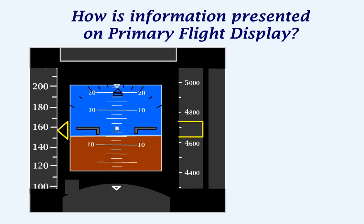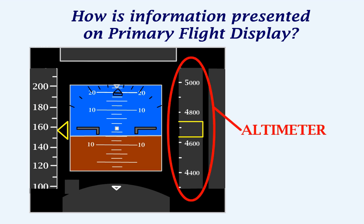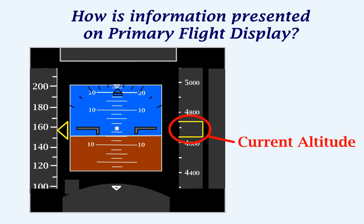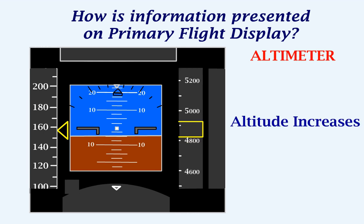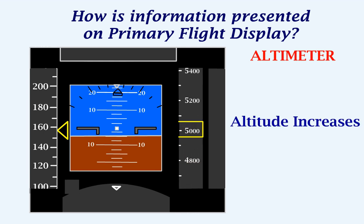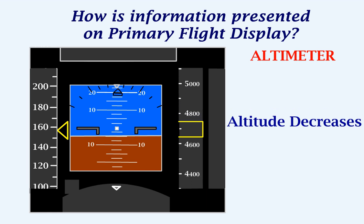Towards the right of the attitude indicator we have the altimeter, which gives the aircraft's altitude. This represents the aircraft's current altitude. As the altitude increases, the altitude tape rolls down; as the altitude decreases, the altitude tape rolls up.